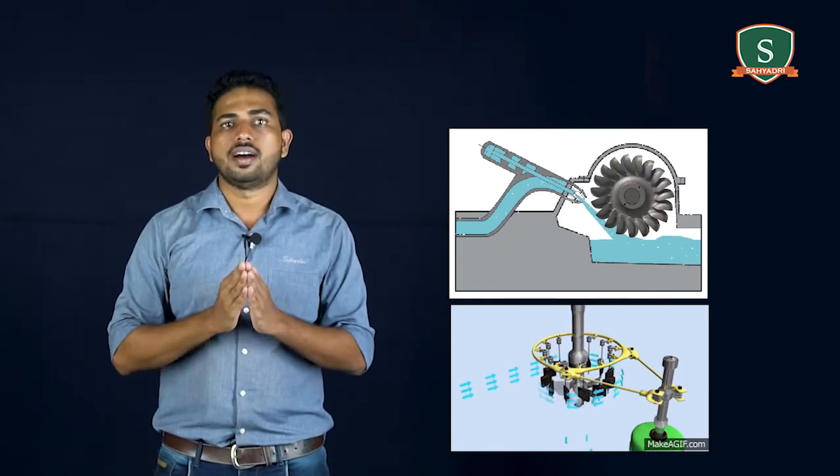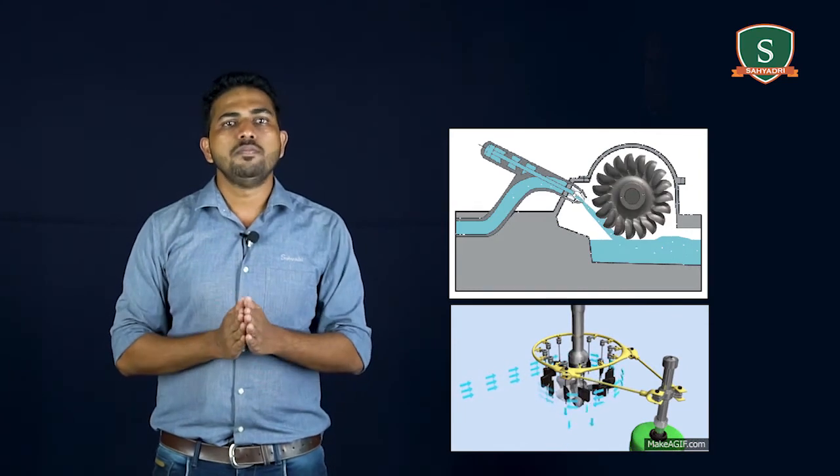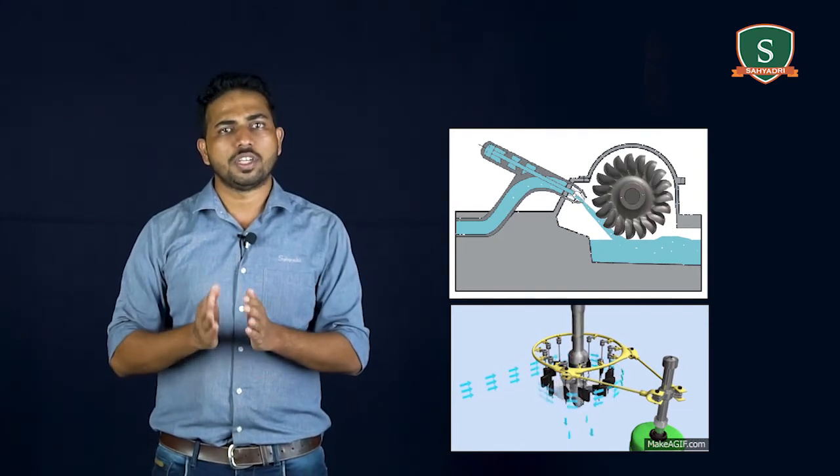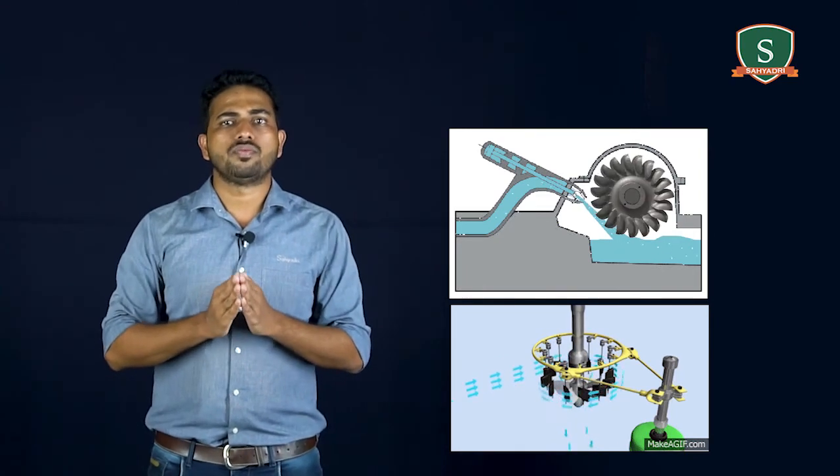This is known as rotor or impeller while the fixed part is known as stator. Impeller is the heart of rotor dynamic machines within which a change of angular momentum of fluid occurs.